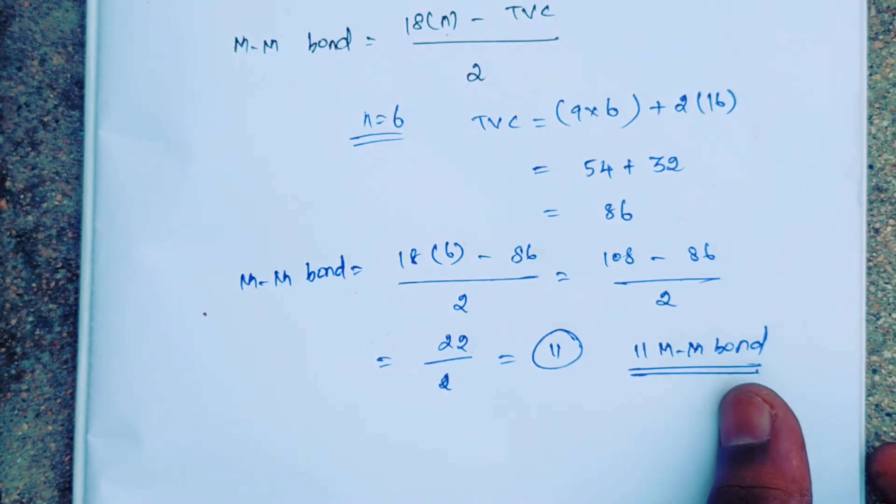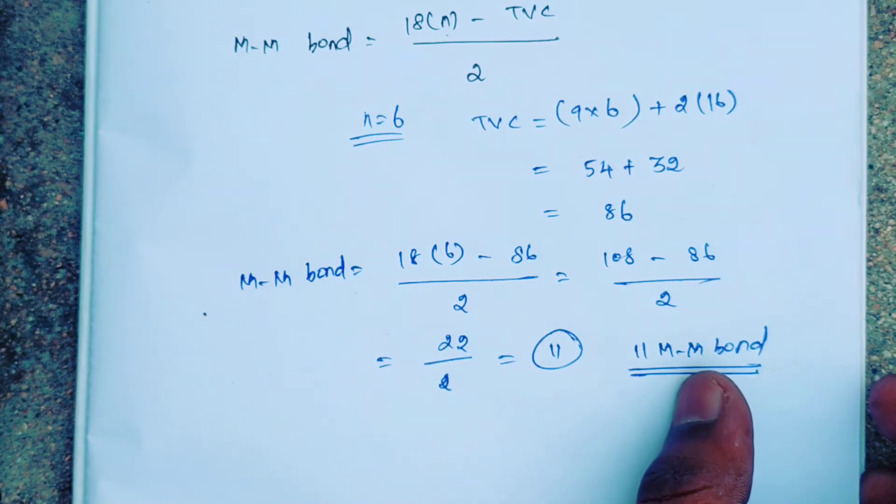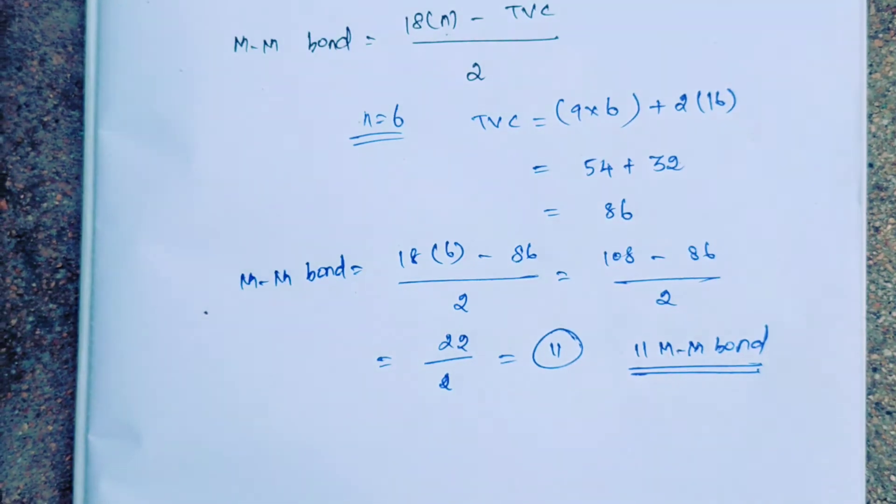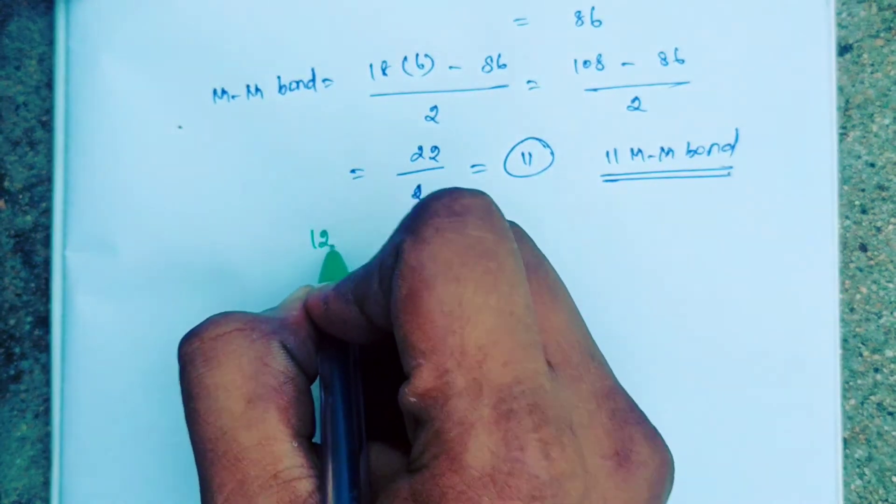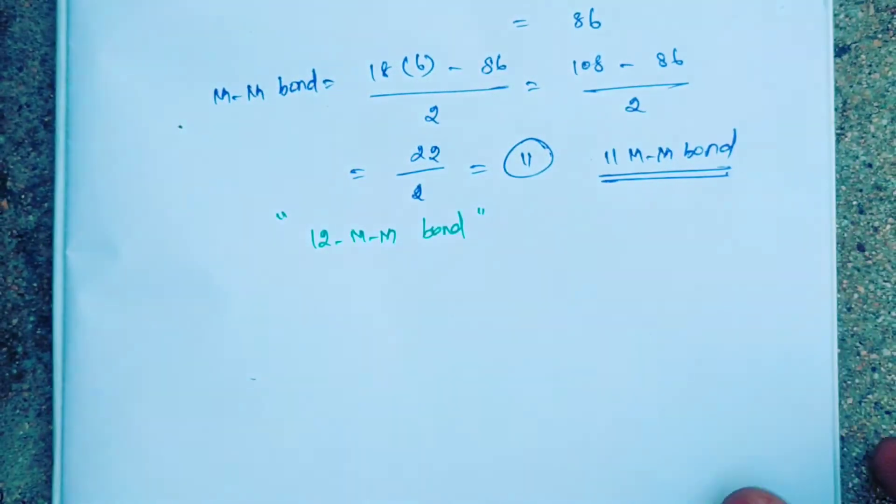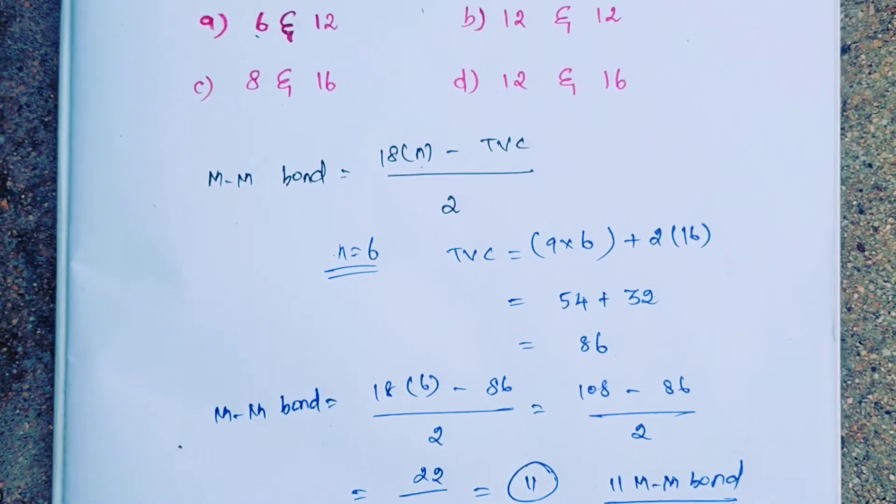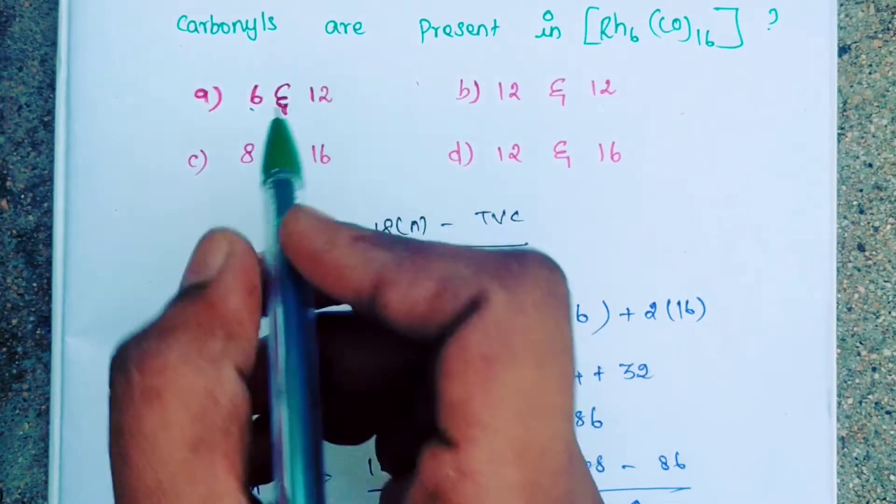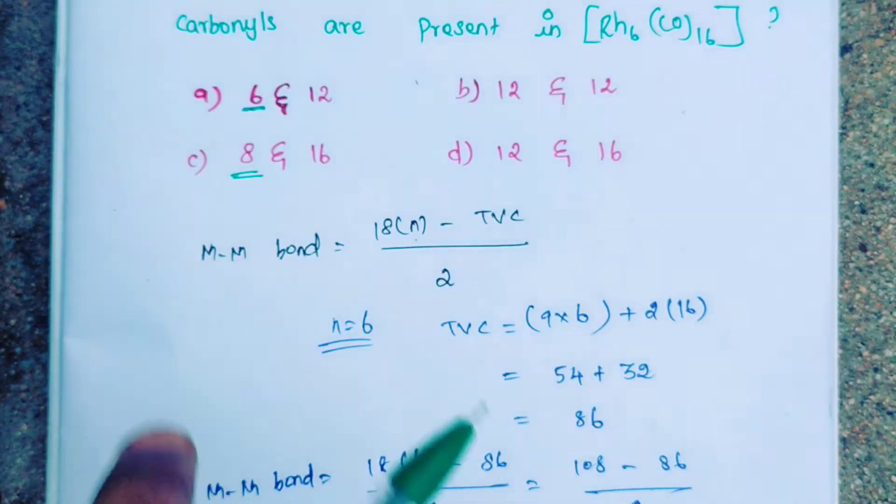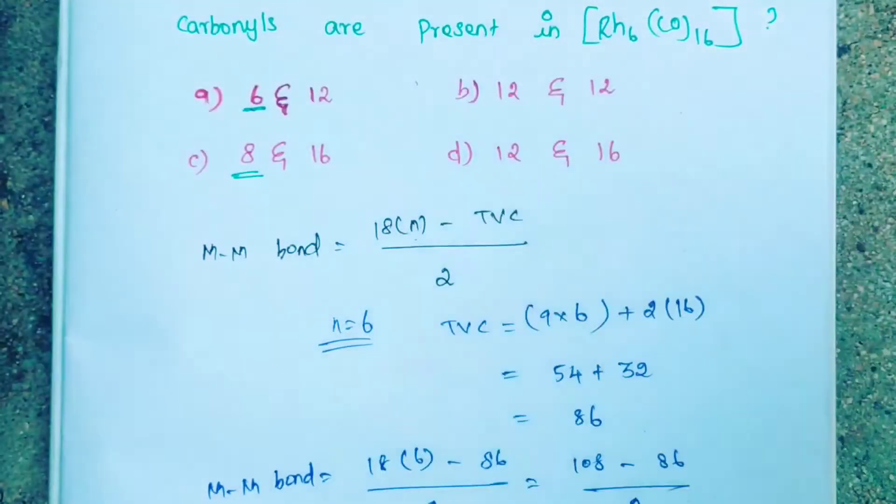Usually we use this calculation. But experimentally, while the calculation method gives 11 metal-metal bonds, originally it can show 12 metal-metal bonds. So options A and C with 6 are wrong. The answer is either B or D.